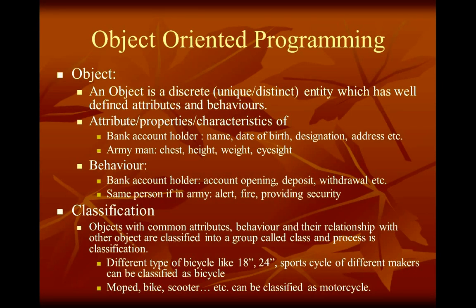What is the object-oriented programming concept? The first concept is object. An object is a discrete entity which has well-defined attributes and behaviors. Attributes, properties, characteristics, data members, or state all refer to the same thing. For example, if a person is a bank account holder, then the attributes may be name, date of birth, designation, address, and so on. However, if the same person is an army man, then the attributes become chest, height, weight, eyesight, and so on.